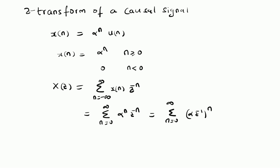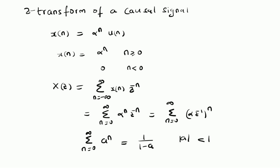We have the geometric series from n = 0 to ∞ of a^n, which is equal to 1/(1 − a) for values of |a| less than one. That is, when the absolute value of a is less than one, the series equals 1/(1 − a).